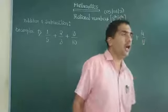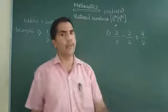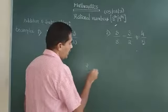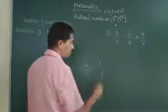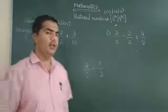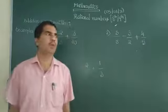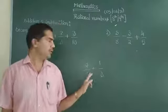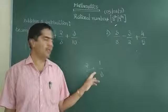When the denominators are not common, like 2 by 5 plus 1 by 3, there are two methods actually. One method is the basic thing, that is making the denominators common.